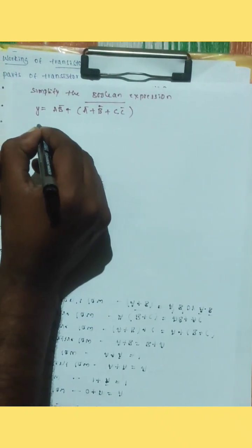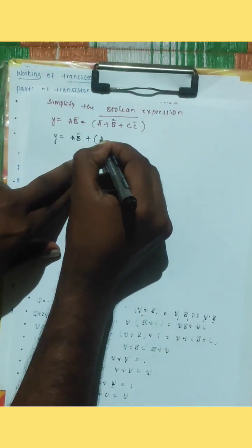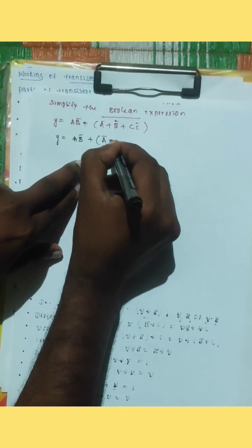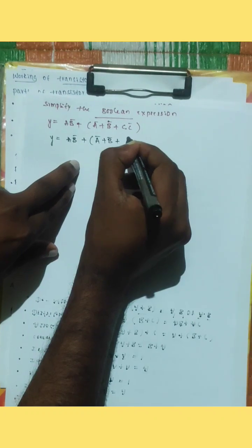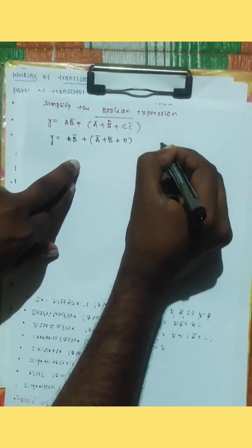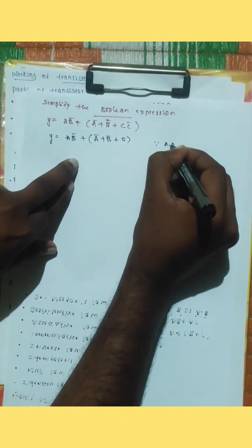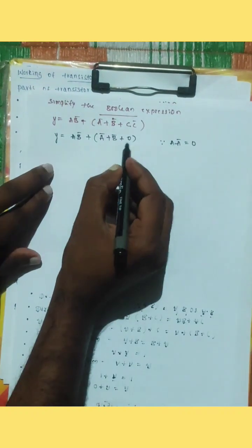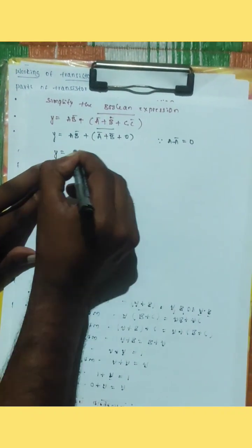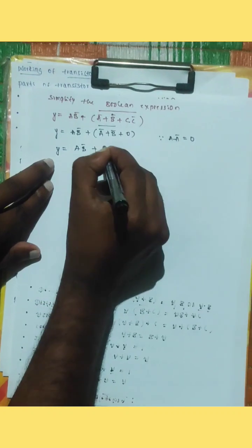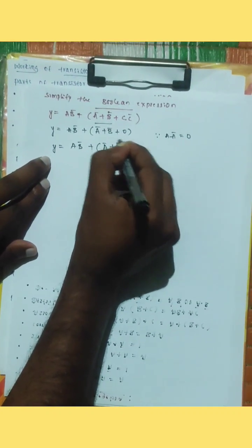I have to solve this problem. y equal to ab bar plus a bar plus b bar plus c into c bar, which is nothing but zero, because a into a bar equals zero. So that whole bar gives: y equal to ab bar plus a bar plus b bar, whole bar.